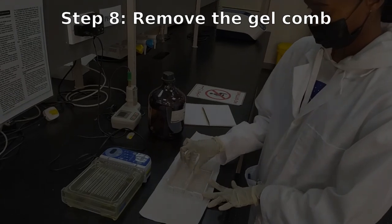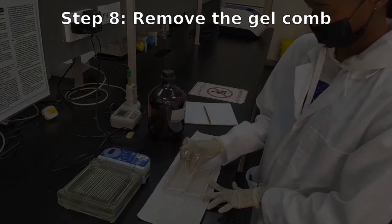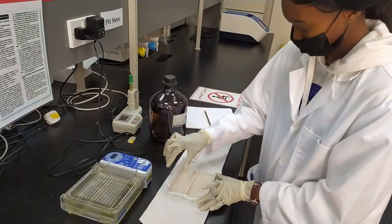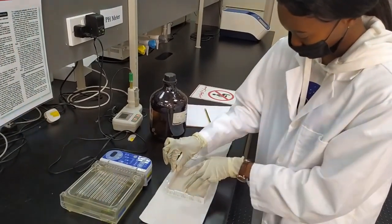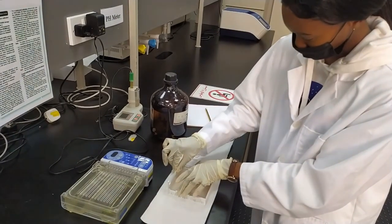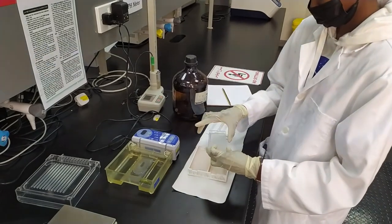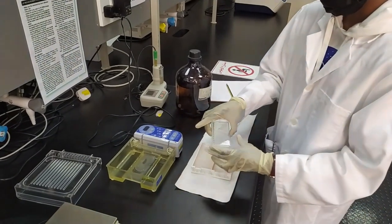Once the gel is ready, you will have to remove the combs. And you do so by pulling straight up. Quite often, students try to wiggle the comb before removing it. That tends to damage the wells. So, please make sure you don't do that. Just pull straight out. And now your gel is ready. It's that easy. See you in the next video.